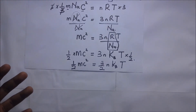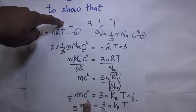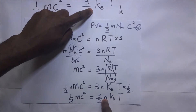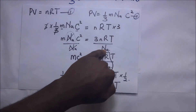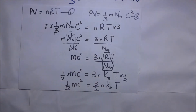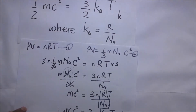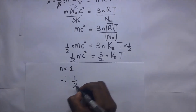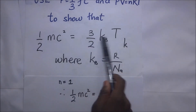Have we proven the question? Our question asks us to show that ½mC² = (3/2)K_BT. We have ½mC² = (3/2)nK_BT. Since we are dealing with one mole of an ideal gas, the value of n is 1. Therefore, the expression becomes ½mC² = (3/2)K_BT, which is exactly what we needed to show.